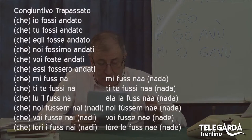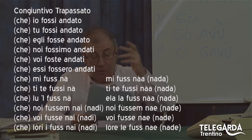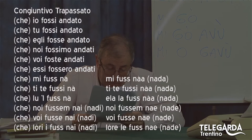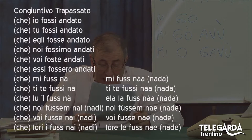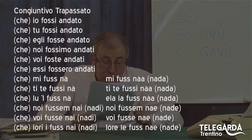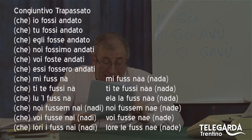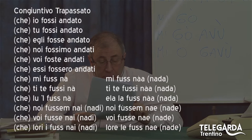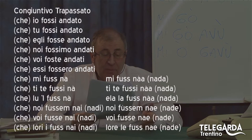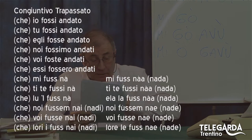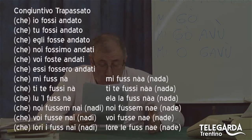Congiuntivo trapassato: che io fossi andato, che tu fossi andato, eccetera. Attenzione, che qui c'è lo scioglilingua. Che mi fus na, che ti te fussi na, che lul fus na, che noi fussem nae o che fussem nadi, che voi fusse nae o che voi fusse nadi, che lori i fus nai o che lori i fus nadi. Femminile: che mi fus na o che mi fus nada, che ti te fussi na.